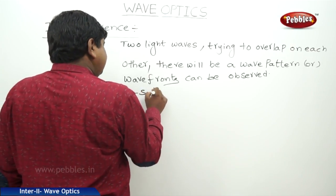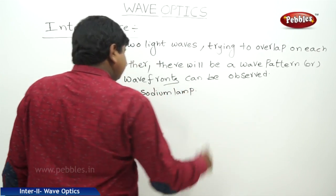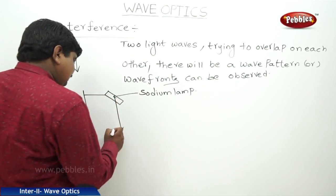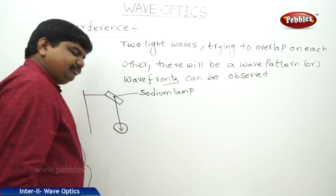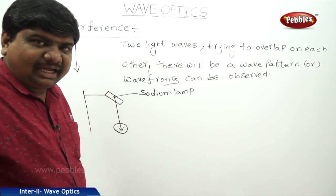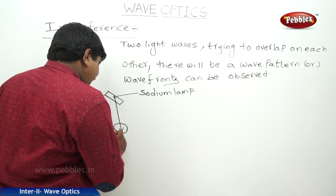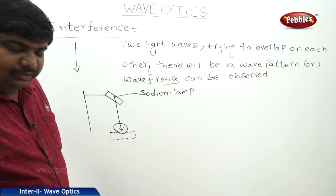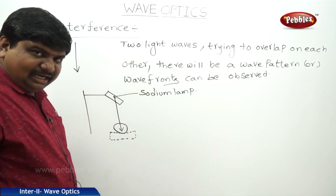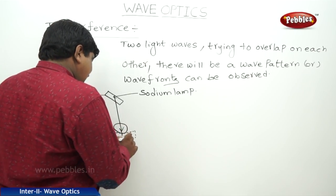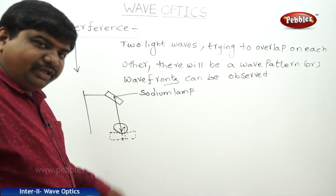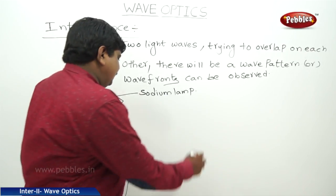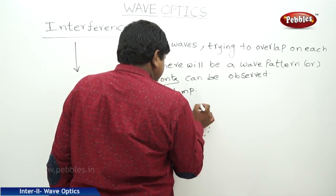Due to the refraction, this light will bend. Here, one spherical lens is placed. A lens is a material that can transmit light. Just beneath the lens, one black colored paper is placed. This black colored paper acts as a reflector of the light. Because of that, the incident light and the reflected light — their intensities of these two waves — try to overlap with each other.